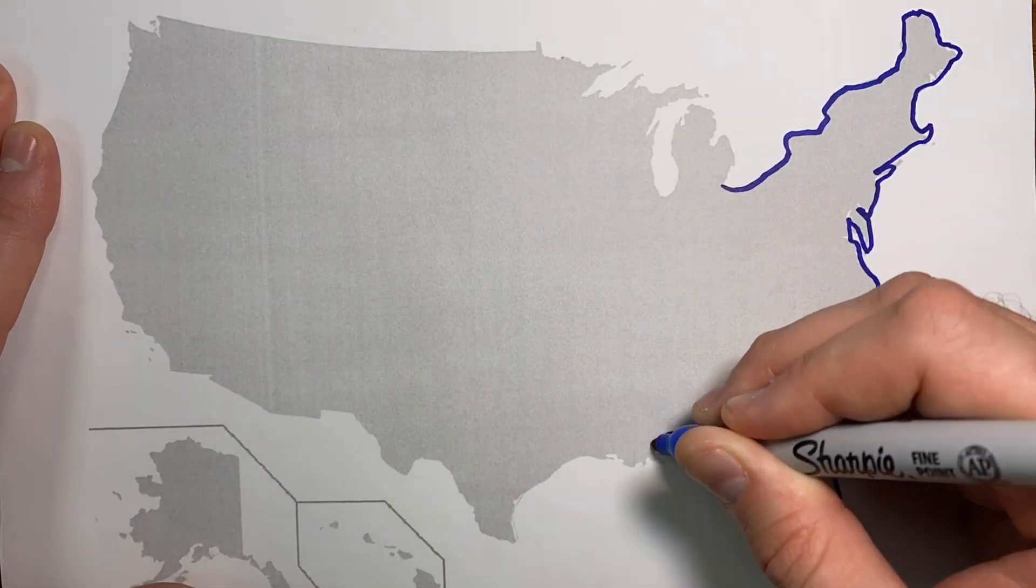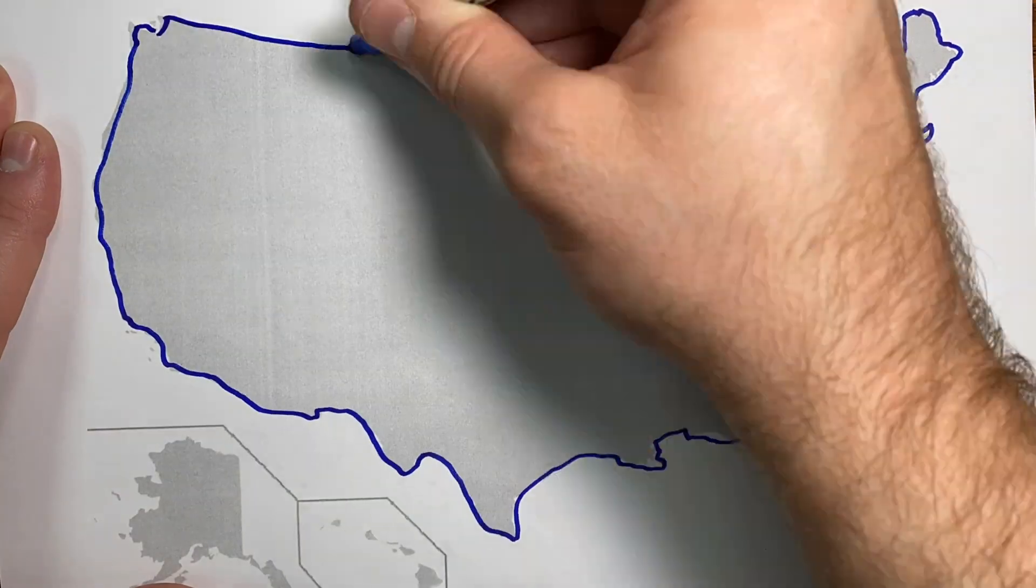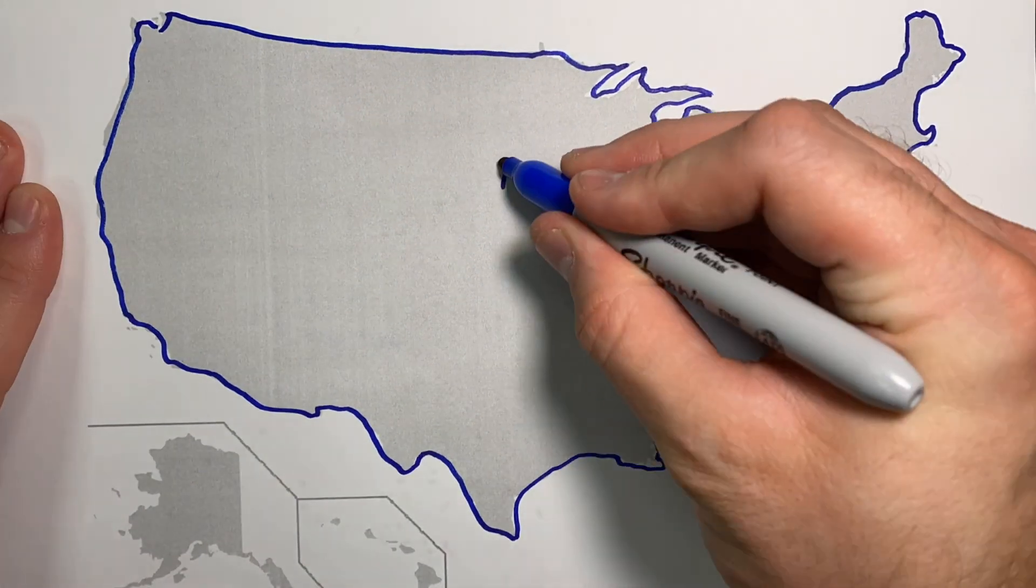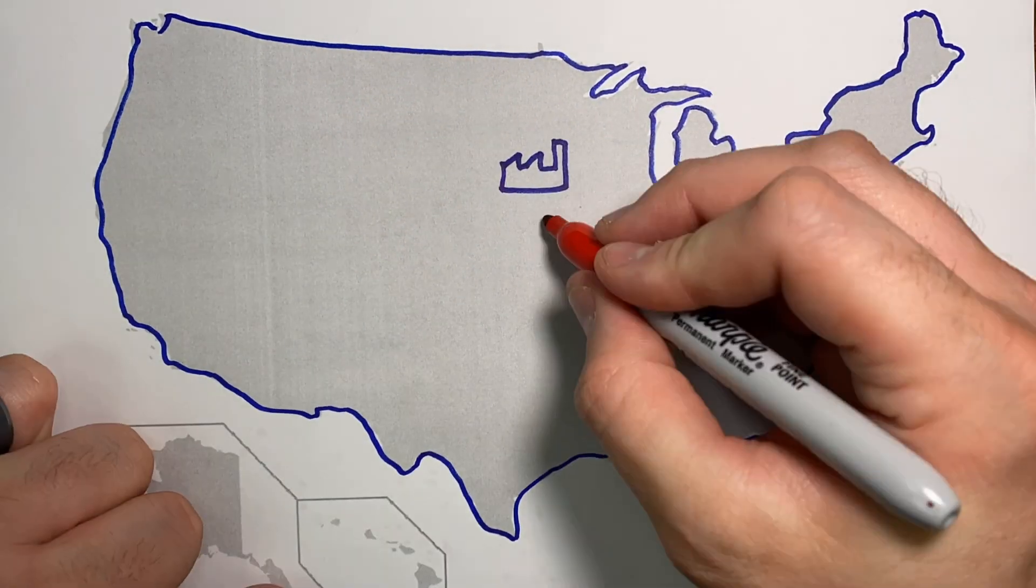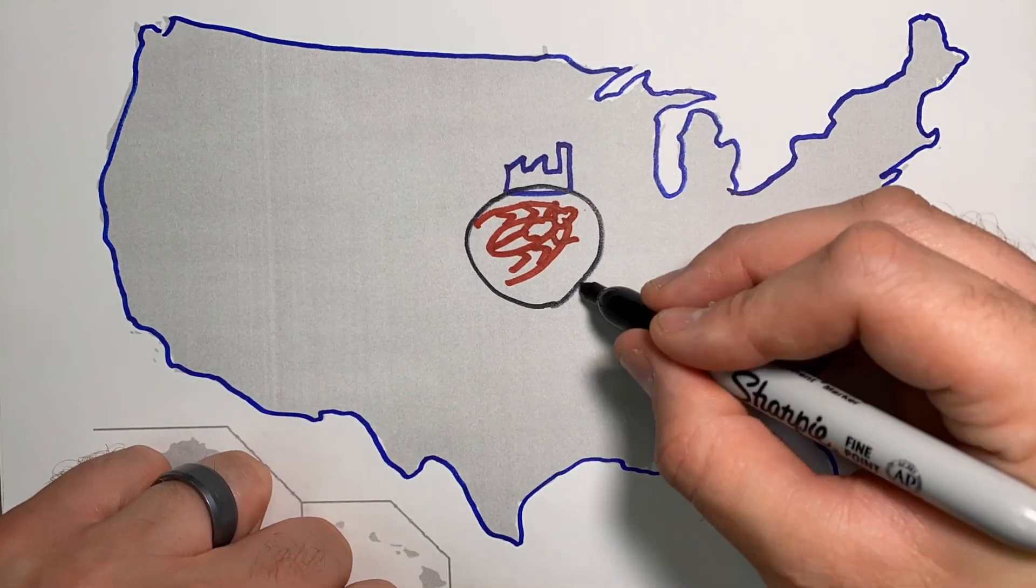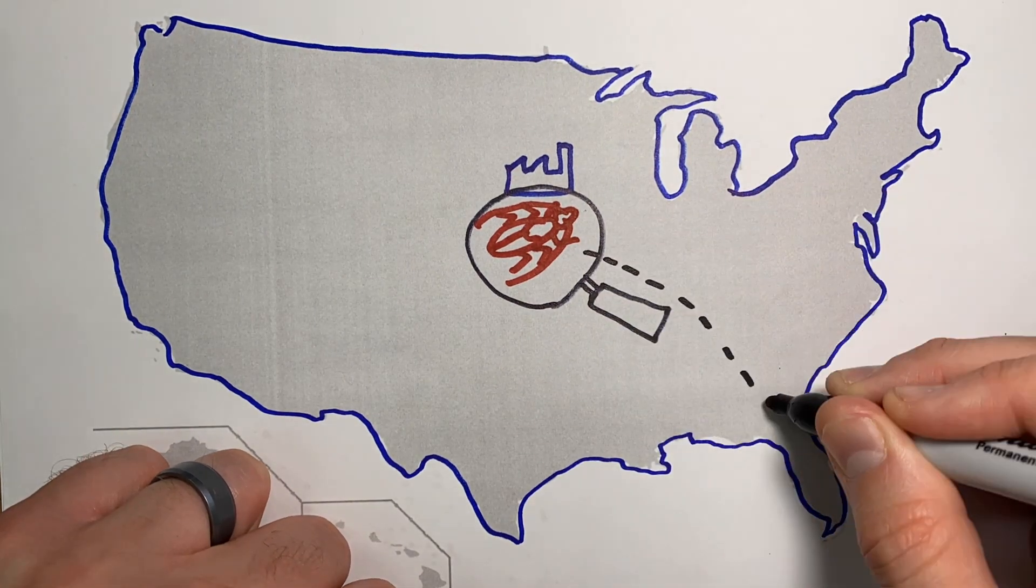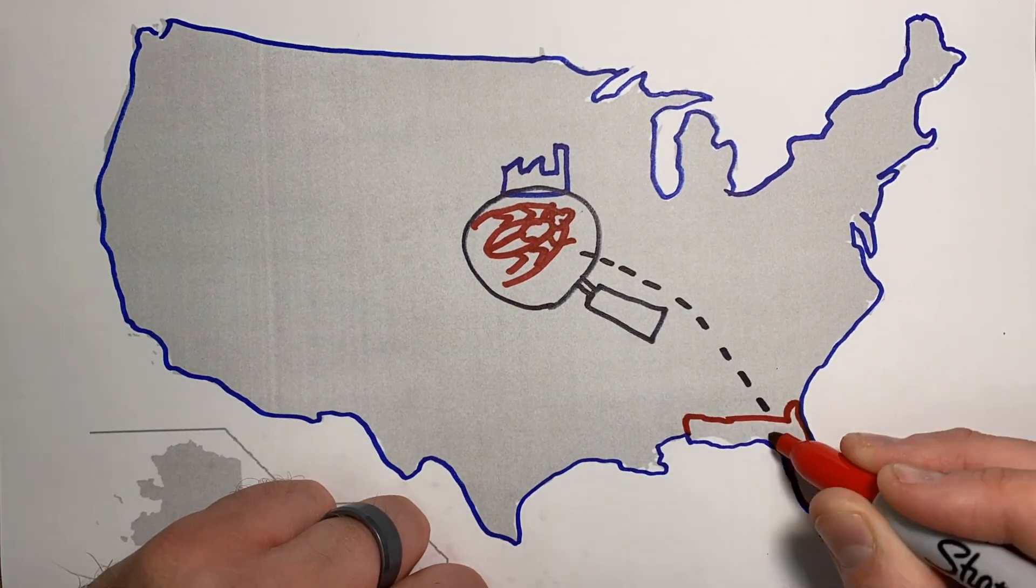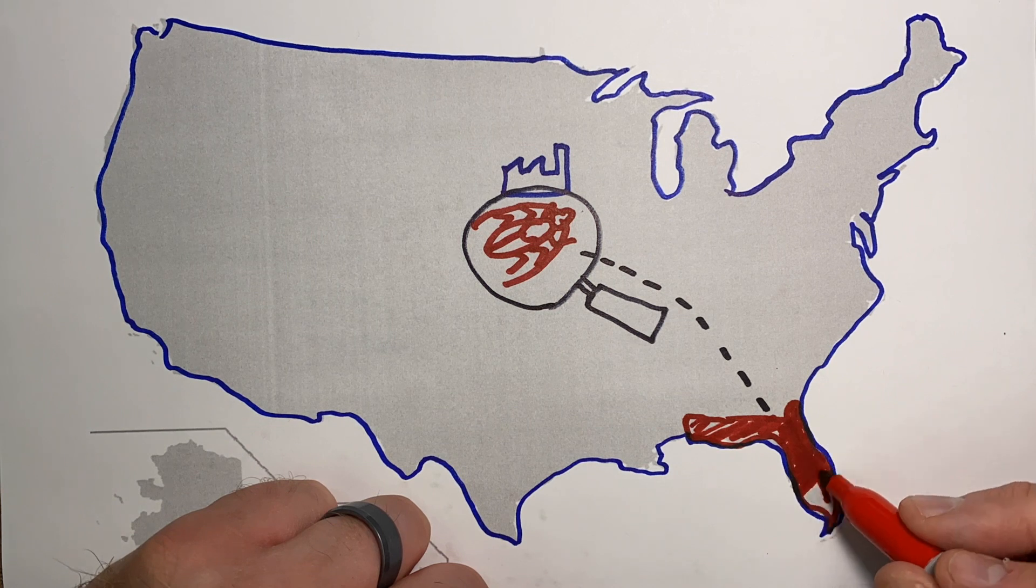An example of how a good pest control program should work: There was a plant located in the Midwest that started seeing instances of a Florida woods cockroach. Florida woods cockroaches are not native to that area, so they evaluated their suppliers and found out one of them came from Florida. They established corrective actions and didn't see any more instances of Florida woods cockroaches.